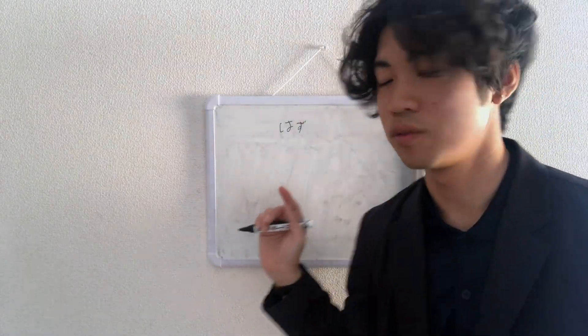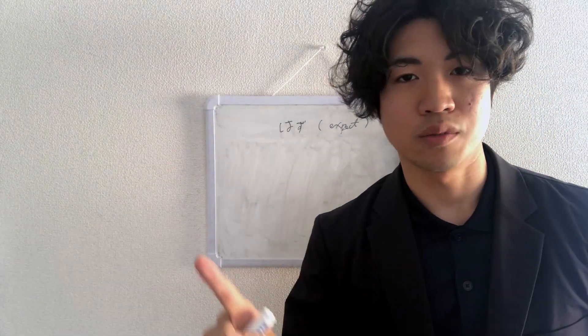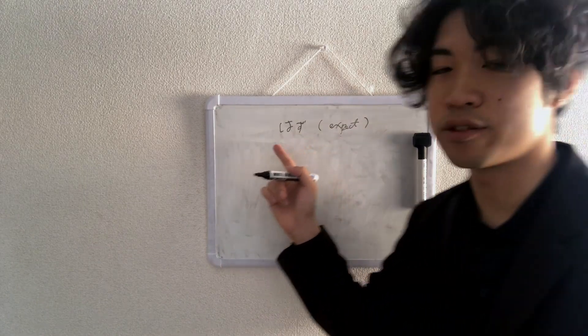Hey everyone, this is Taiki. Today we're going to learn はず. はず means expect to, but in English, it's better to think it's supposed to.